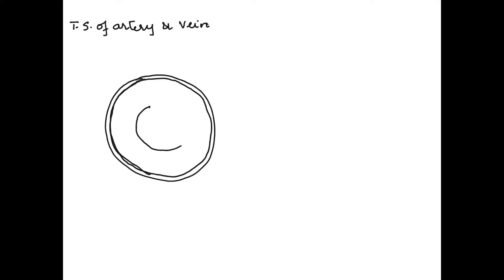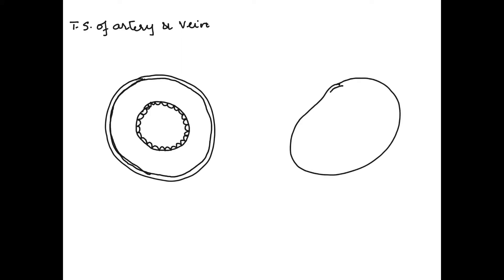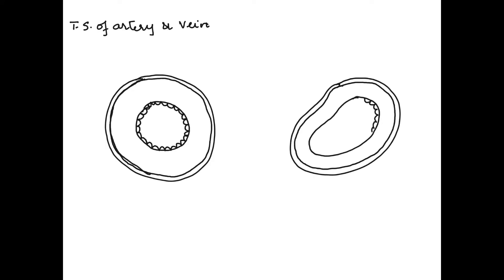When we draw an artery we draw a circular structure, because the artery maintains its shape and does not collapse even if there is no blood present. Whereas the vein is not drawn as an exact circular structure, because the vein is unable to maintain its shape when there is no blood inside it — it is flexible and collapses, whereas the artery does not.